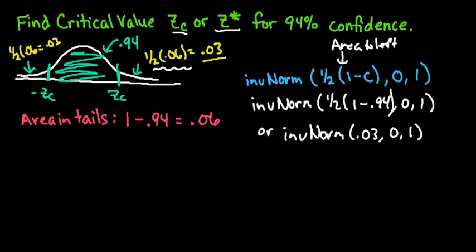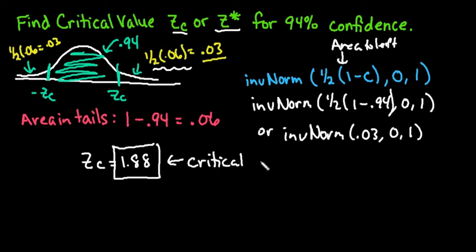So let's go ahead and write that down. So our critical value for this one is going to be 1.88. Typically, we only report the positive value. Sometimes they will ask you for both critical values, and then you would just put a negative 1.88 and positive 1.88. So just know what your textbook is looking for when they are looking for the critical values.